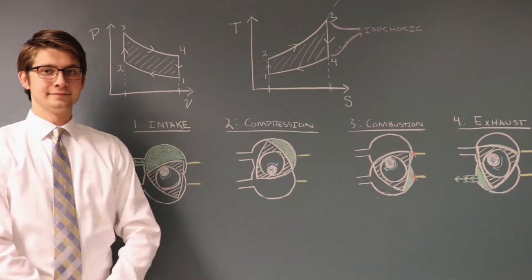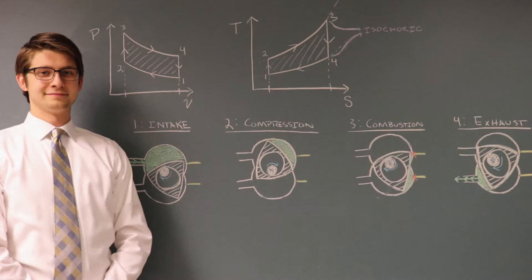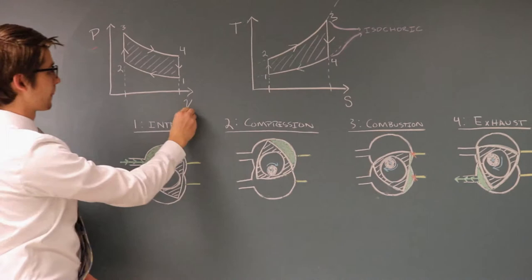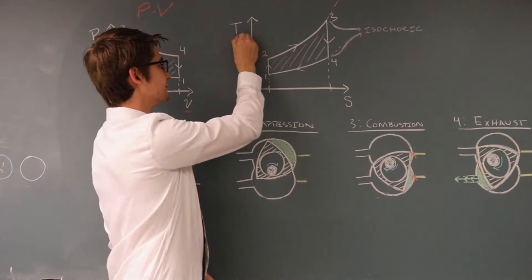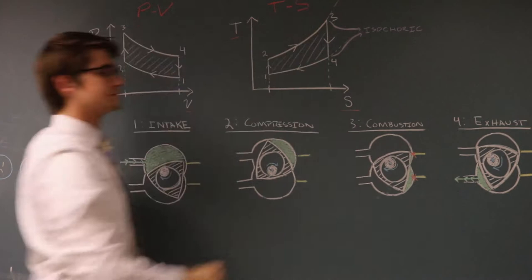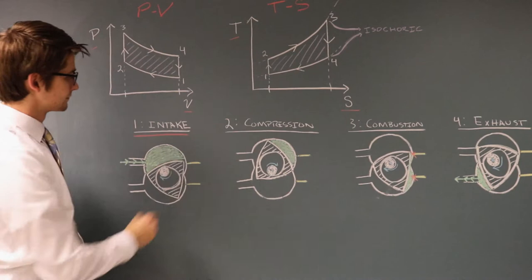The Wankel engine works on the same thermodynamic Otto cycle that reciprocating piston engines use: intake, compression, combustion, and exhaust. It is relatively simple to follow the thermodynamic processes of this cycle using the PV and TS diagrams. During intake, air is brought into the chamber, starting the cycle at state 1.